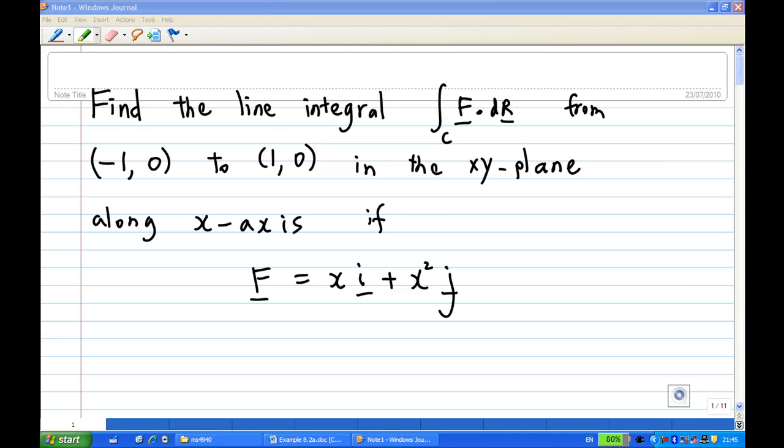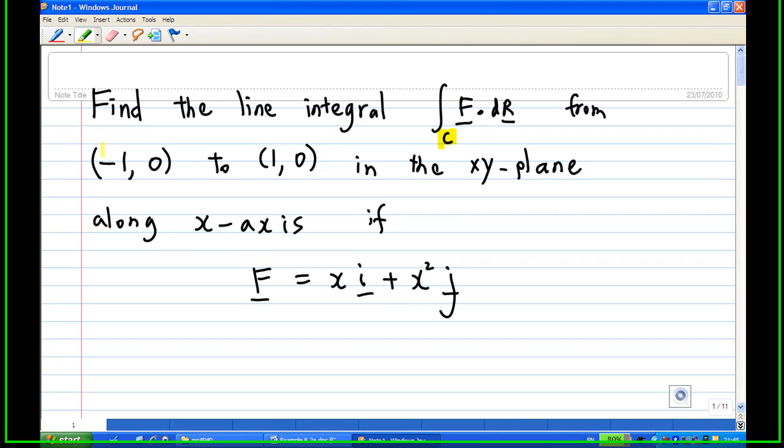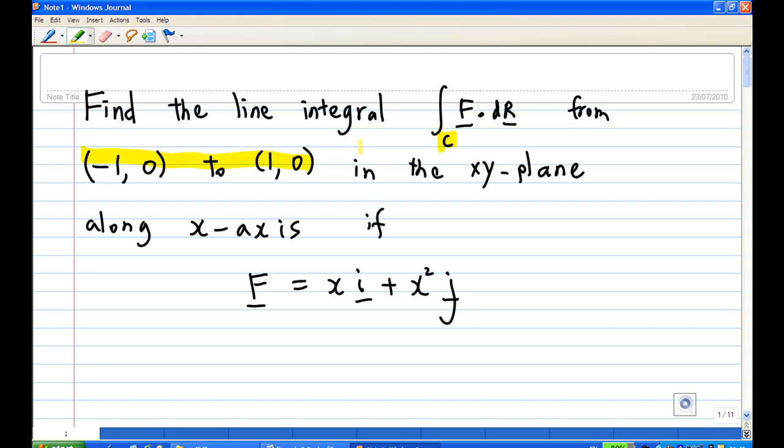First of all, let's try to understand what is the path. Now this path here, this curve, is actually a straight line path from (-1,0) to (1,0) in the xy-plane. Travel along the x-axis. So the path will look something like this.